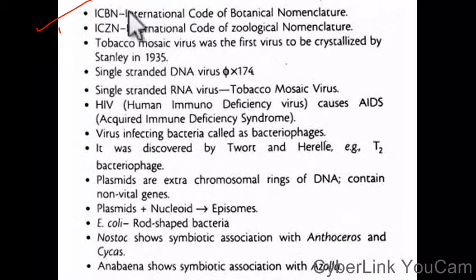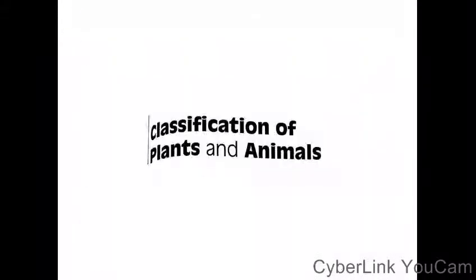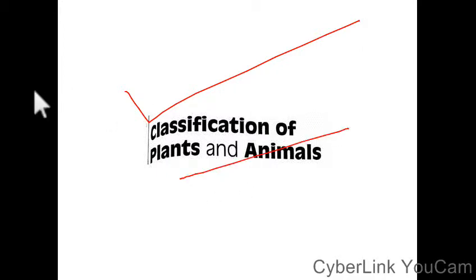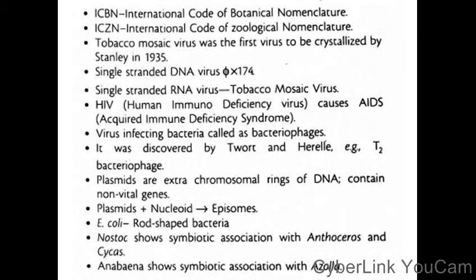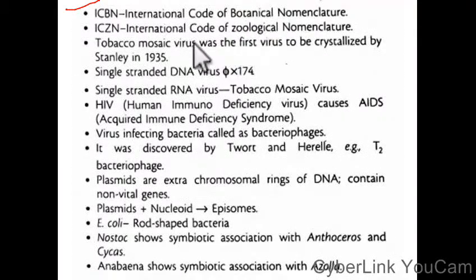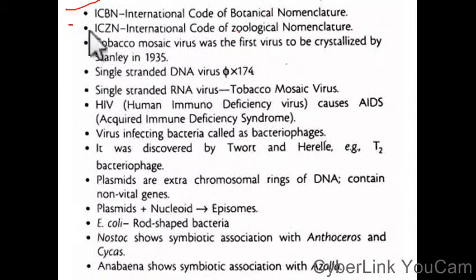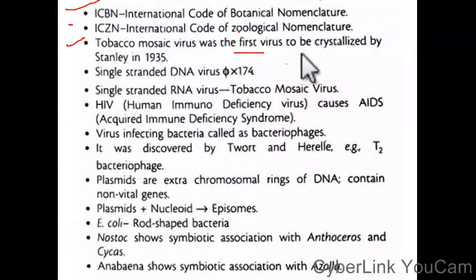We discuss biology — the classification of plants and animals. Important facts: ICBN, International Code for Botanical Nomenclature; ICZN, International Code of Zoological Nomenclature. Tobacco mosaic virus was the first virus to be crystallized.